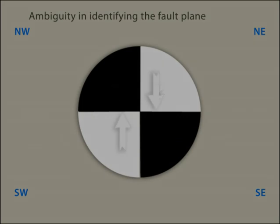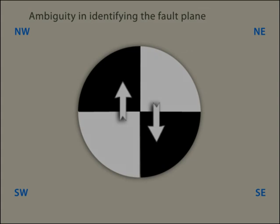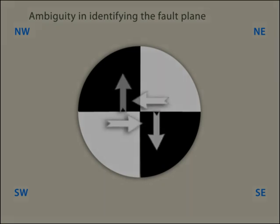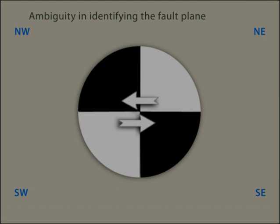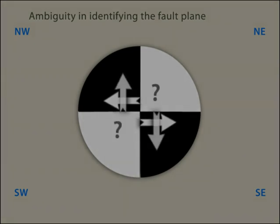Notice that this pattern of dilatations and compressions can be produced either by right lateral strike-slip faulting on a north-south fault plane, or left lateral strike-slip faulting on an east-west fault plane. Therefore, you must use geological knowledge of the region to decide which nodal plane is the fault plane.